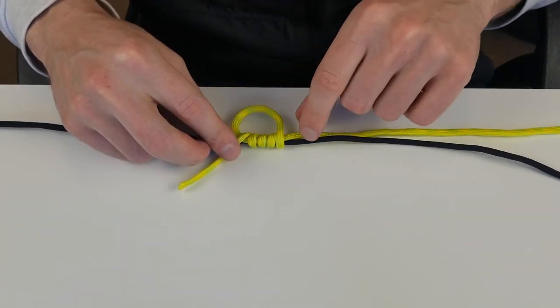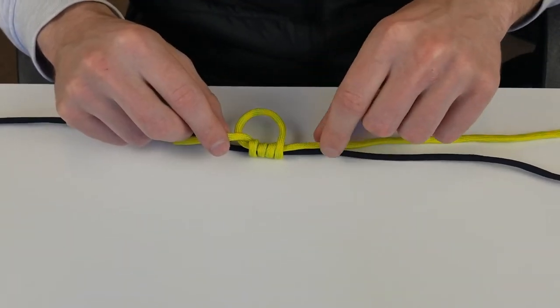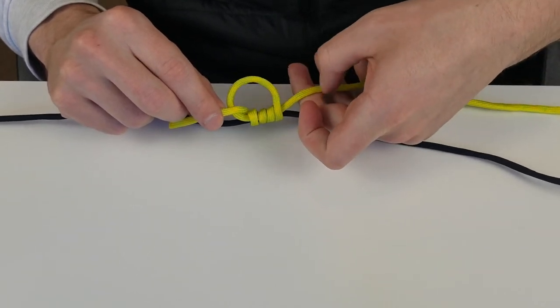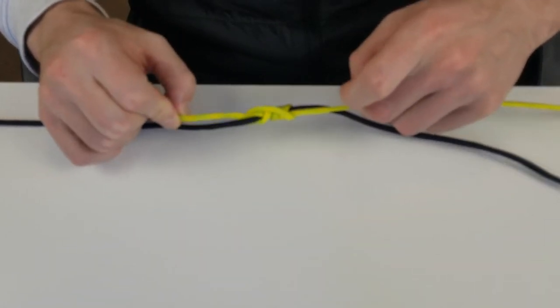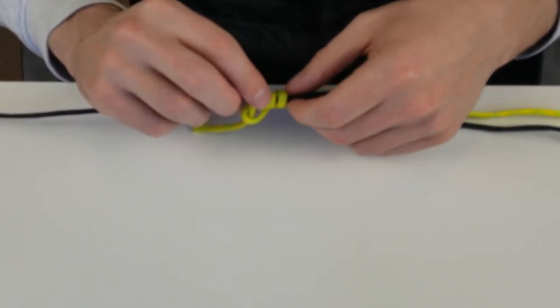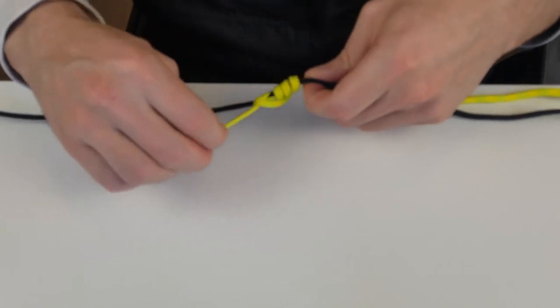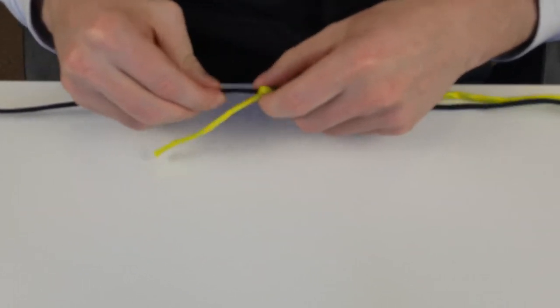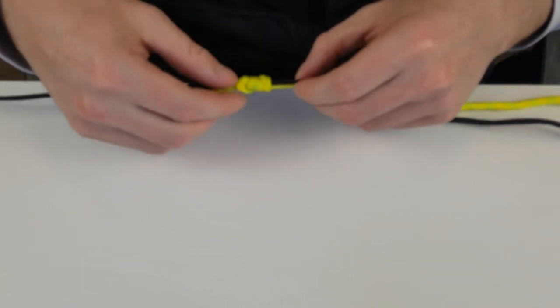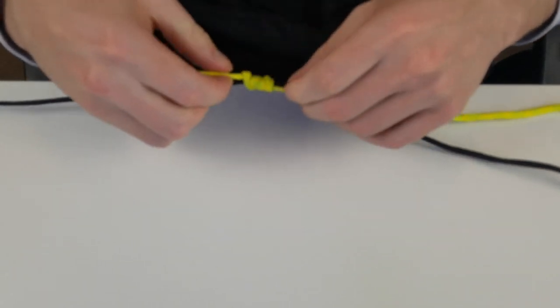It should look something like that. Now grab the tag end and the standing part, the main piece of the monofilament, and slowly start pulling it tight. Before I tighten it I like putting a bit of moisture on this, some water or spit, it'll secure it a bit better. Cinch it up. You can pull the knots down this way and it will secure them better. There's the first one.